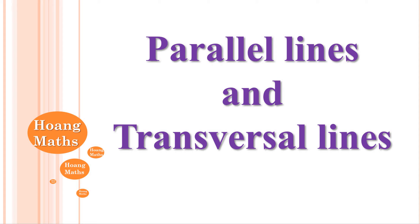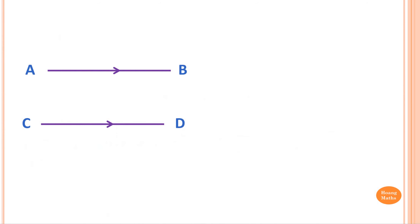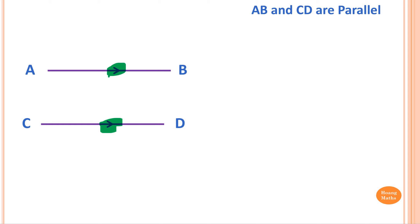You can download this lesson onto your electronic device or even print it out if you like from the description below, so you can work along with me. So let's say we have these two lines here, AB and CD. We know that AB and CD are parallel because of these symbols here — that's what those mean.